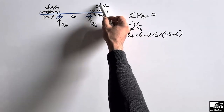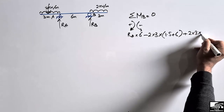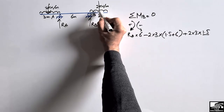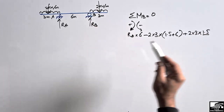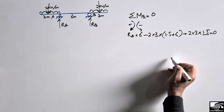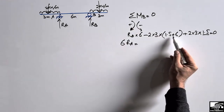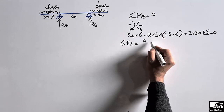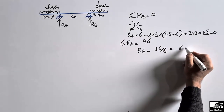The right distributed load also creates a moment about point B and acts in the clockwise direction, so it is positive: 2 × 3 multiplied by its moment arm of 1.5 meters, since the load acts at the center of the 3 meter span from point B. Setting the summation of moments at point B equal to zero, solving gives RA × 6 = 36, so RA equals 36 divided by 6, which is 6 kilonewtons.